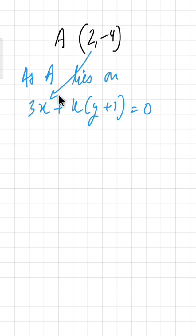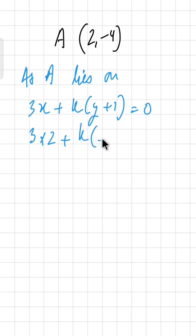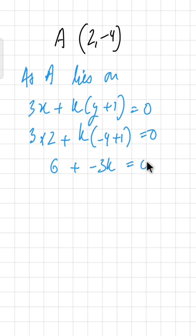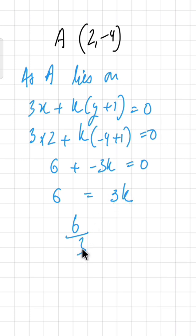A point इस line पर lie करता है, तो A के coordinates को line equation में substitute करेंगे। X को replace करेंगे 2 से और Y को replace करेंगे -4 से। तो: 3×2 + K×(-4+1) = 0 → 6 + K×(-3) = 0 → 6 - 3K = 0 → 3K = 6 → K = 2। आई होप यह clear है। अगर कोई confusion है तो please write in the comment section. Thank you.